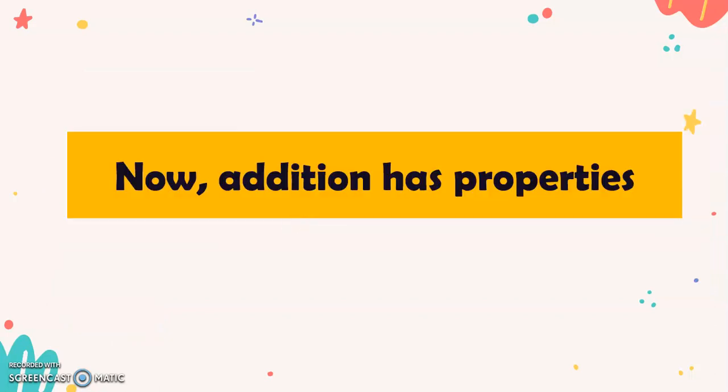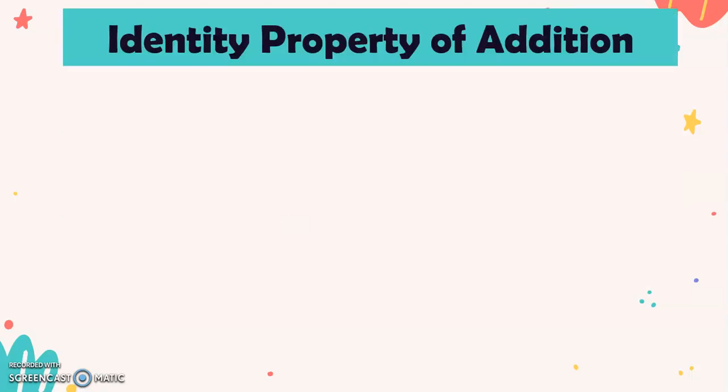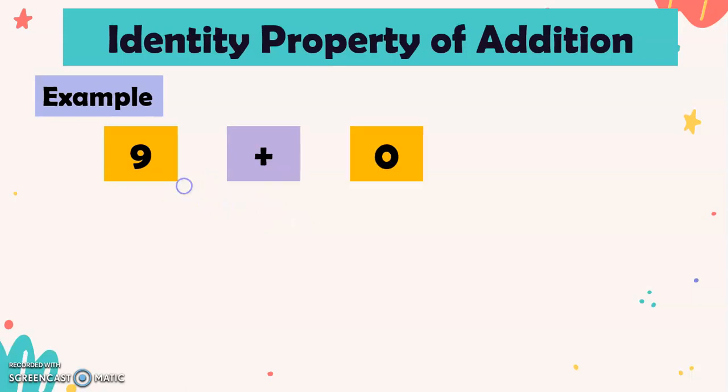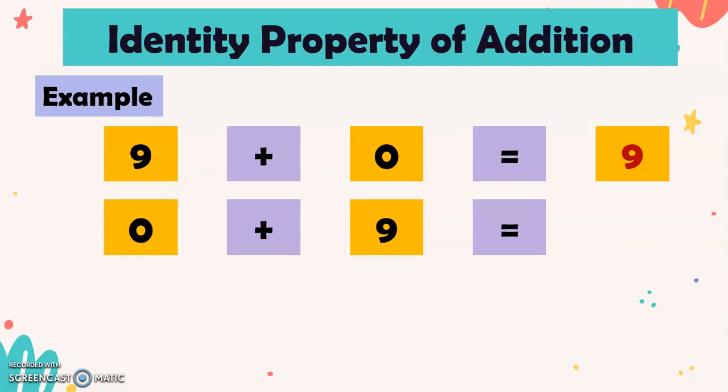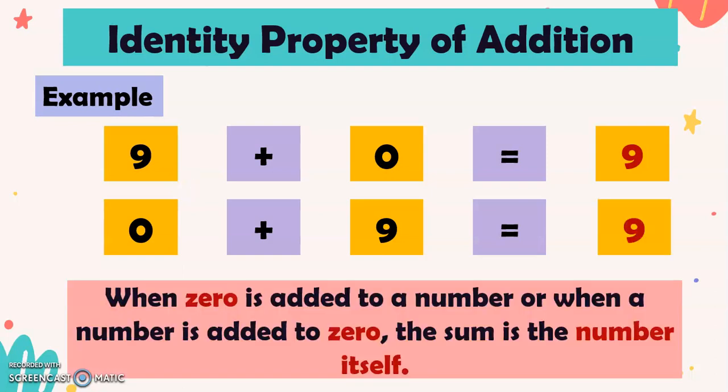Now, addition has properties. The first is what we call the identity property of addition. So for example, we have here 9 plus 0, it is equals 9. And 0 plus 9 is equals 9. When 0 is added to a number, or when a number is added to 0, the sum is the number itself.